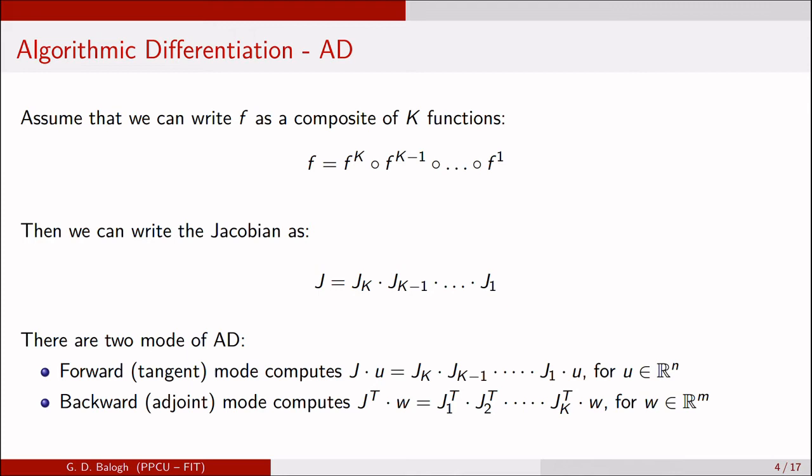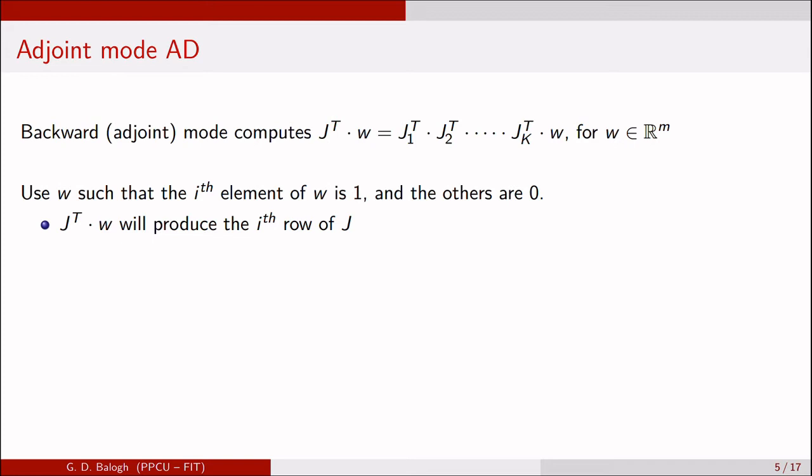We want to use this fact and we can do AD in two different modes. The first one is called forward mode AD, when we compute the action of the Jacobian to a vector from the input space. The backward mode AD computes the action of the transpose of the Jacobian to a vector from the output space. We will do the second one, and in a moment we'll see why.